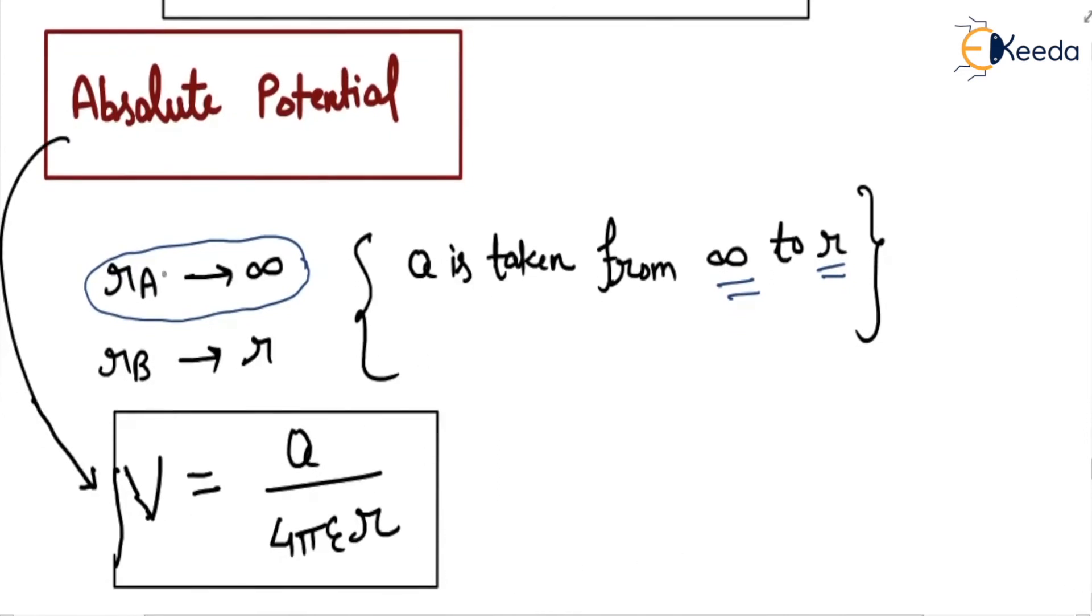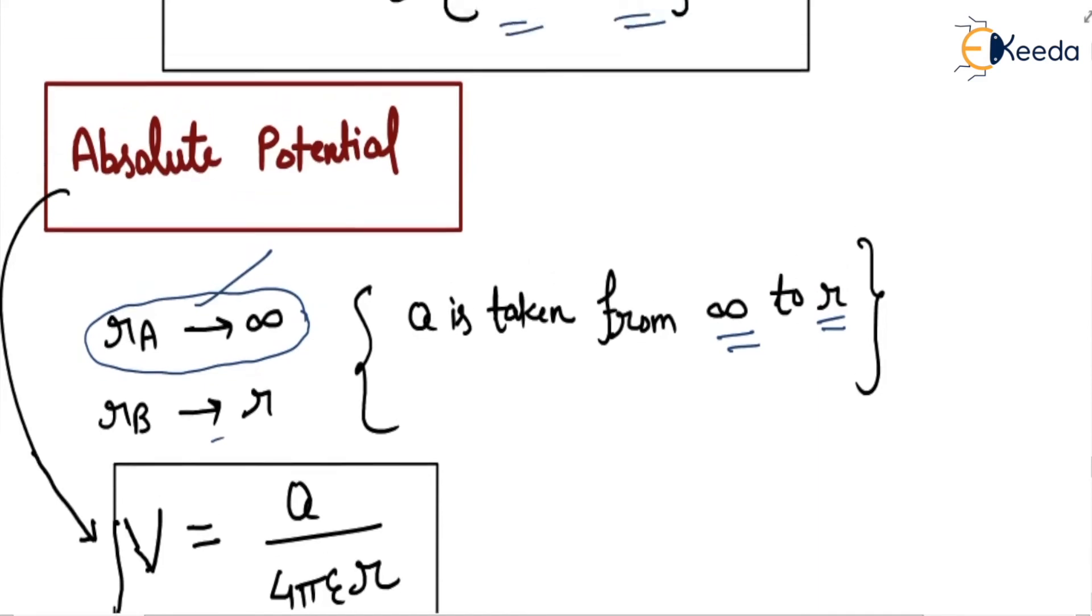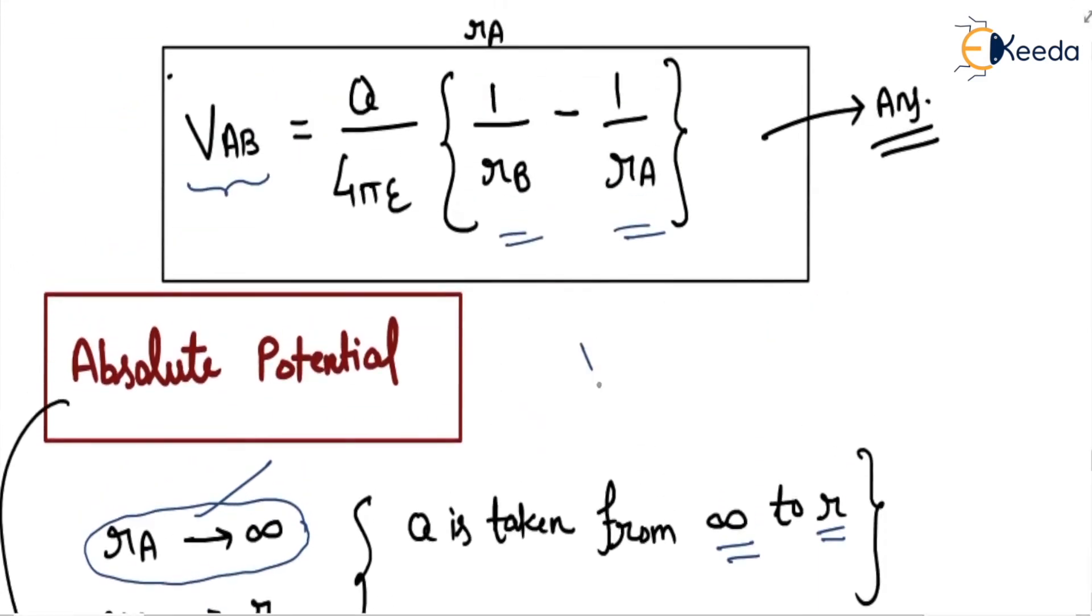Then absolute potential we will obtain. When we put rA equals infinity and rB equals r, then the absolute potential V is q/(4πε₀)[1/r - 1/∞]. So 1/∞ is 0.